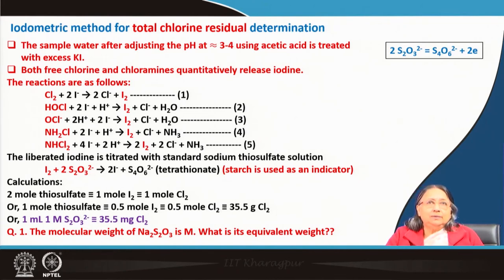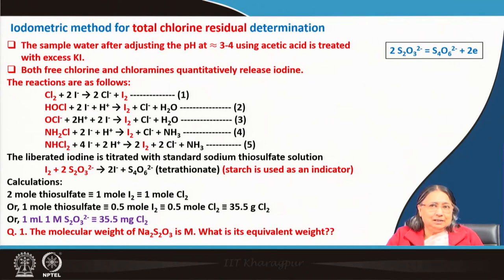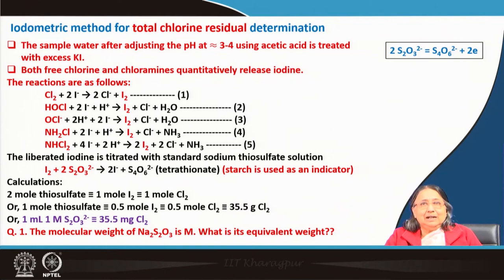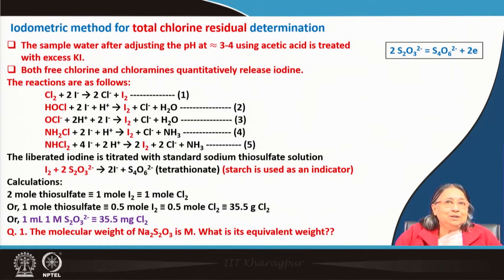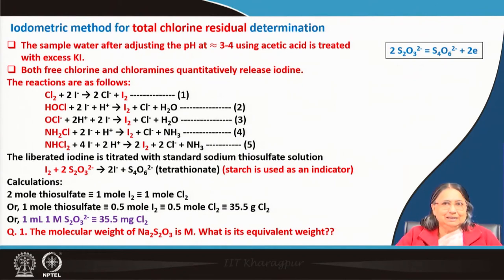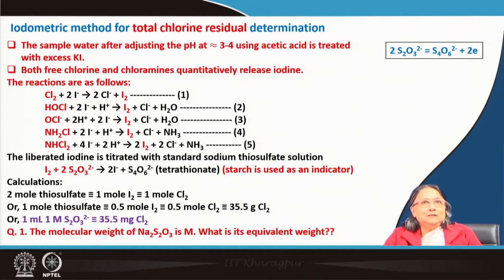The question is: why do we not add starch from the beginning, but only near the end of the titration? This is a home task. Even masters-level students often cannot answer this properly. If we add starch in the beginning, what will happen? We will discuss this perhaps in the next module.